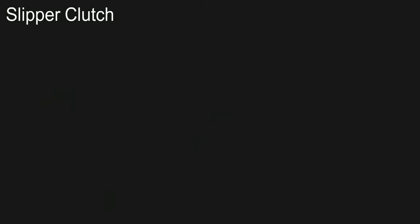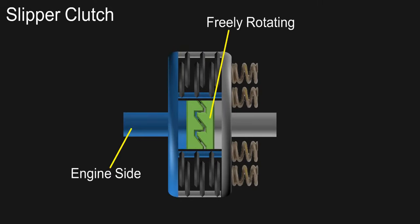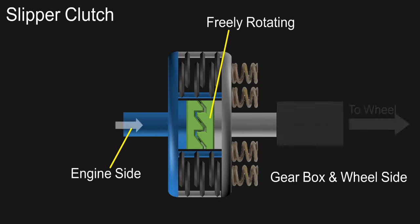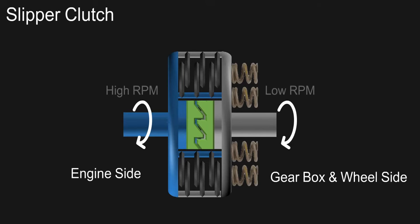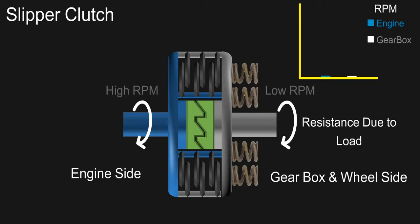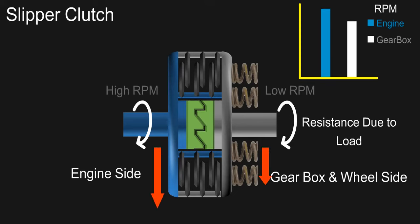Here's how the mechanism of slipper clutch works. This is the engine side and this is gearbox and wheel side. When engine is transmitting power to clutch, it runs at higher speed than the driven shaft, which connects the input of the gearbox. As the driven end is facing resistance to motion due to load, it tends to run slightly slower than the engine speed.